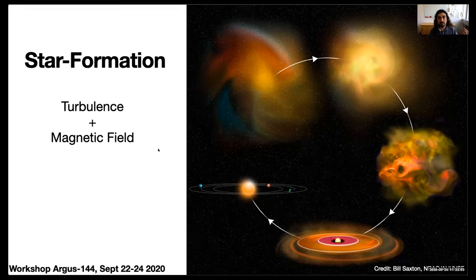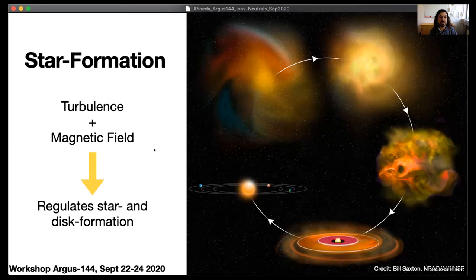Turbulence is important both for setting up the initial conditions, but also to provide support to the dense core. The magnetic field is crucial to understand what is going on with the disk formation processes. And the interplay between these two are really some of the key important processes for regulating star and disk formation and evolution.